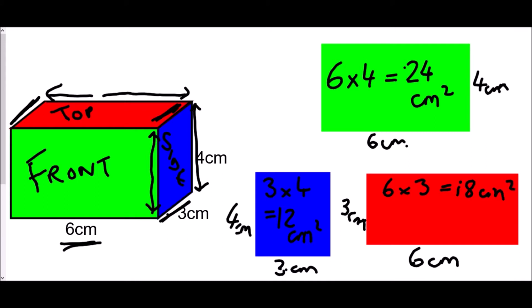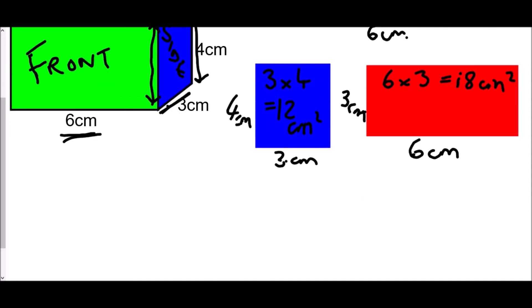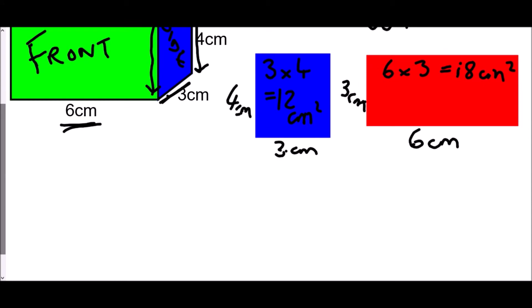There is one final trick for surface area — there are more faces on this cuboid. The front is paired with the back, an identical rectangle. The right side is paired with the left, and the top is paired with the bottom. So the front area of 24 cm² needs to be multiplied by 2, giving 48 cm².